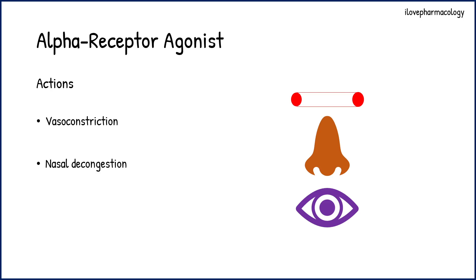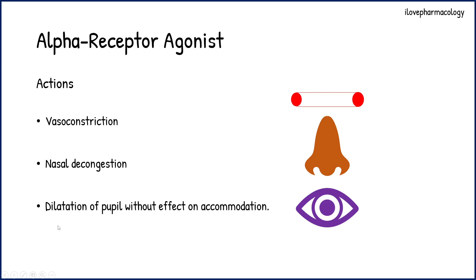On the eye, alpha receptor agonists act on the alpha-1 receptor present on the radial muscle fibers of the iris. By acting on these radial muscle fibers, they cause dilatation of the pupil without any effect on accommodation. So on the nasal mucosa, it causes nasal decongestion, and in the eye it causes pupil dilation without affecting accommodation.